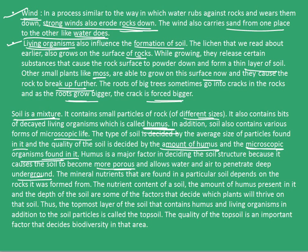The mineral nutrients found in a particular soil depend on the rocks it was formed from. The nutrient content of a soil, the amount of humus present in it, and the depth of soil are some major factors that decide which plants will thrive on that soil. The topmost layer of the soil that contains humus and living organisms in addition to soil particles is called the topsoil. The quality of topsoil is an important factor that decides biodiversity in an area.